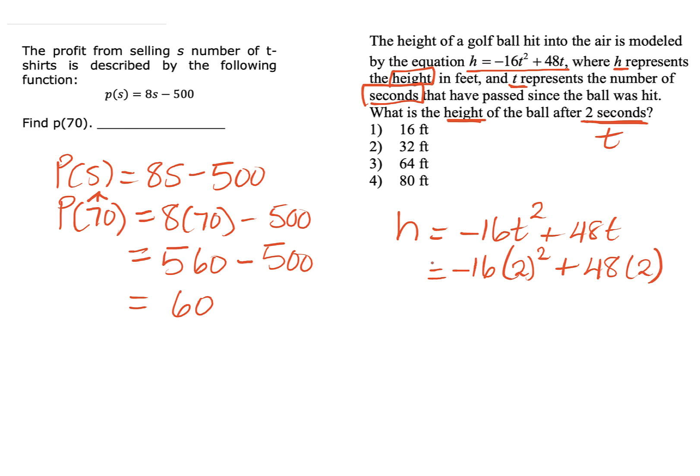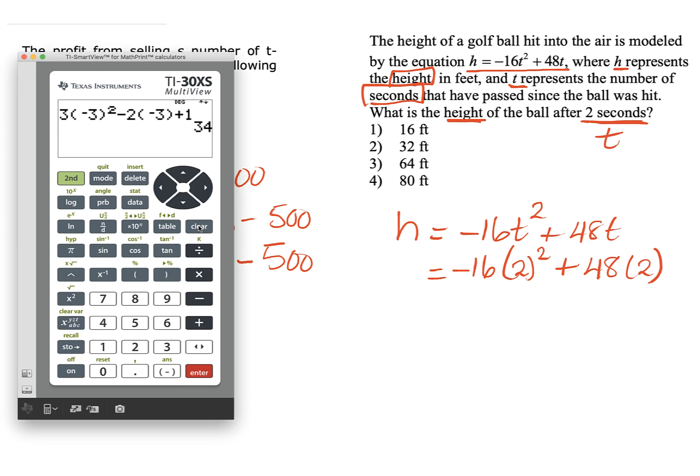If you were on the calculator section, after you've substituted your value for T, we would take our calculator and we will just put it in. Negative 16, 2. We must square it plus 48. Open the parentheses. Let's insert 2. Close the parentheses. Enter. Notice our answer is 32.